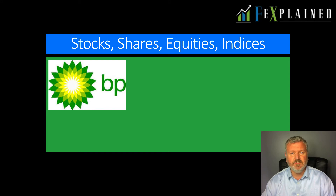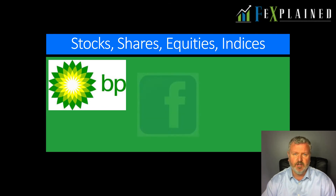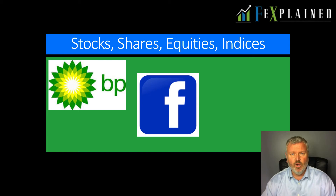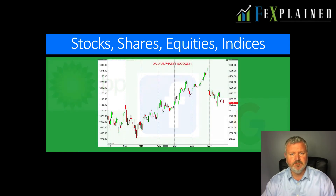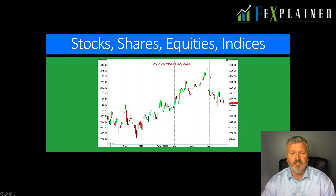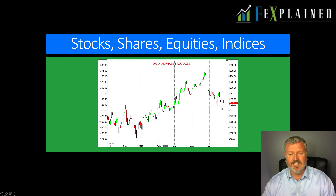For example, different types of companies we could buy stocks in could be BP (British Petroleum), Facebook, or Alphabet — Google's parent company. Here's a chart of Alphabet/Google and you can see the stock price rallying through much of 2019. If you bought Google through here you would be happy and probably making a profit, but then there's been a significant move back lower as we've moved through late April into May 2019.